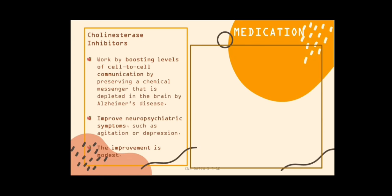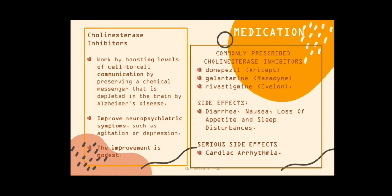Treatment. Cholinesterase inhibitors work by boosting levels of cell-to-cell communication by preserving a chemical messenger that is depleted in the brain by Alzheimer's disease. They improve neuropsychiatric symptoms such as agitation or depression, though the improvement is modest. Commonly prescribed cholinesterase inhibitors include donepezil, galantamine, and rivastigmine. Side effects include diarrhea, nausea, loss of appetite, and sleep disturbances. Serious side effects include cardiac arrhythmia.